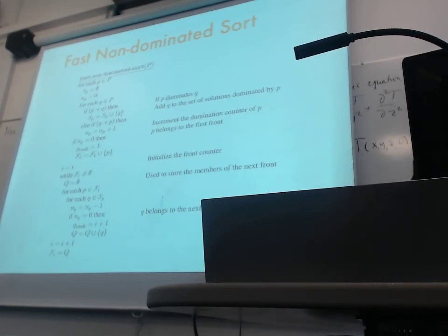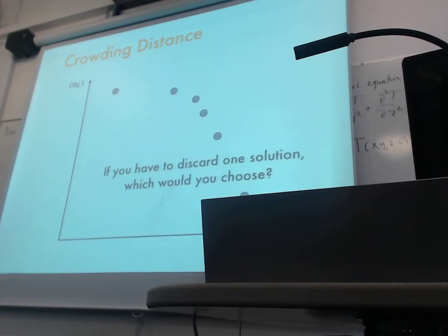So each solution P in our population, and then we compare it to each other solution in the population. If P dominates Q, then Q is added to the set of solutions dominated by P. So SP is the list of other solutions that P dominates. Otherwise, if Q dominates P, then domination counter of P gets increased. So after we go through this loop, if NP is zero, which means no other solution has dominated P, right? So then P belongs to the first front. The front level that we discussed. So P's rank becomes one. And then the front one gets edited P.